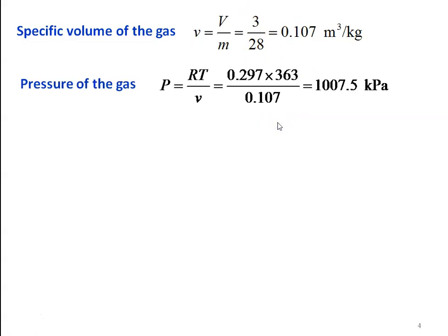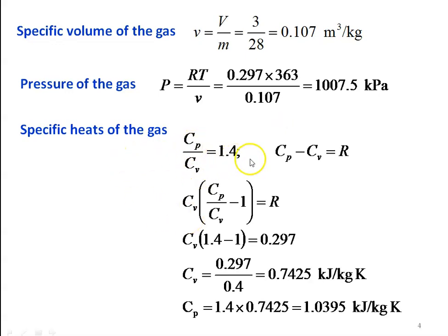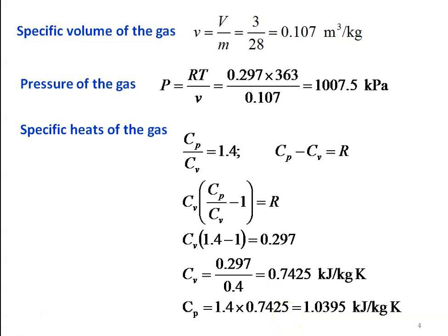Pressure of the gas: from the perfect gas equation PV equal to RT, P equal to RT by V, which is 0.297 into 363 divided by 0.107 equal to 1007.5 kilo Pascal. To calculate the specific heat, we have Cp by Cv gamma equal to 1.4, and Cp minus Cv equal to R. Taking Cv as common: Cv into (Cp/Cv minus 1) equal to R. So Cv into (1.4 minus 1) equal to 0.297, giving Cv equal to 0.297 divided by 0.4 equal to 0.7425 kilo joules per kilogram Kelvin. And Cp equal to 1.4 into Cv: 1.4 into 0.7425 equal to 1.0395 kilo joules per kilogram Kelvin.